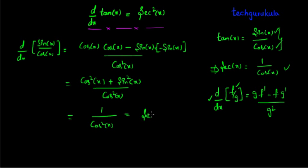We can write this as secant square of x. So, we can say, derivative of tan of x is equal to secant square of x.